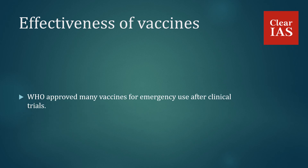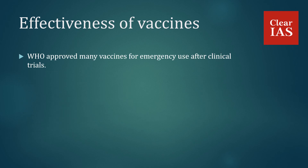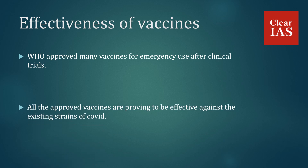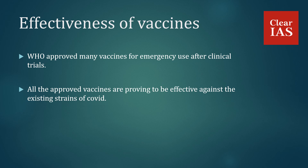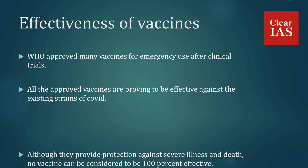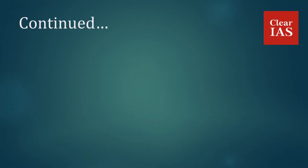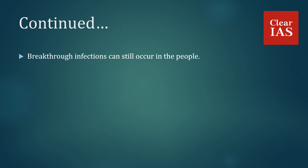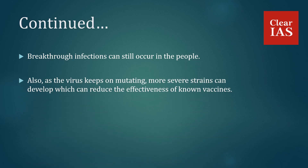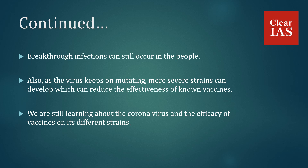Effectiveness of vaccines. WHO approved many vaccines for emergency use after clinical trials. All approved vaccines are proving to be effective against existing strains of COVID. Although they provide protection against severe illness and death, no vaccine can be considered 100% effective. Breakthrough infections — which occur in fully vaccinated people — can still occur. Also, as the virus keeps mutating, more severe strains can develop which may reduce the effectiveness of known vaccines.